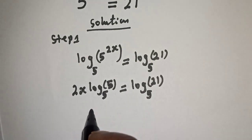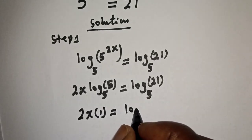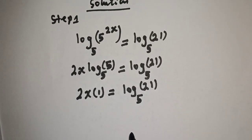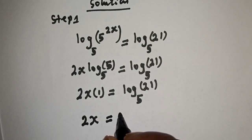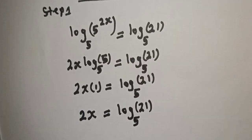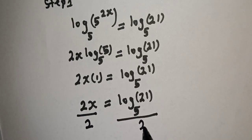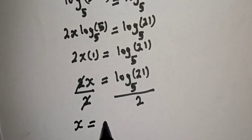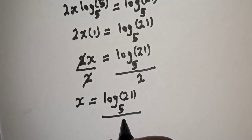Now, log 5 base 5 is 1, so 2x multiplied by 1 is equal to log 21 base 5. That gives 2x is equal to log 21 base 5. We are looking for the value of x, so let's divide both sides of the equation by 2. This cancels, giving x is equal to log 21 base 5 over 2.